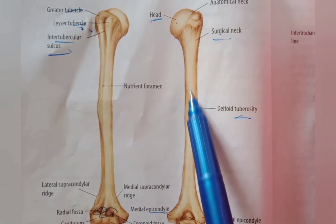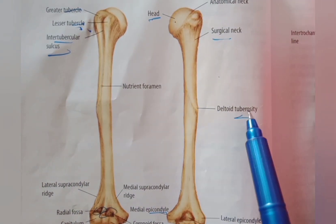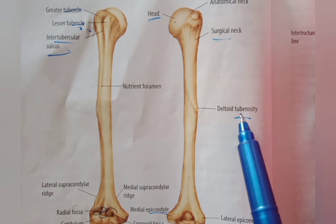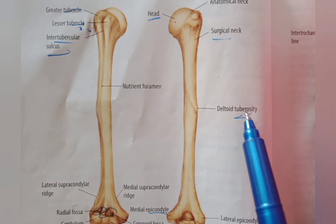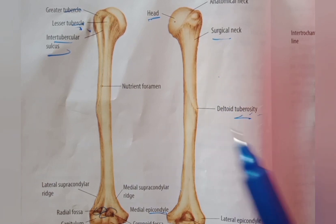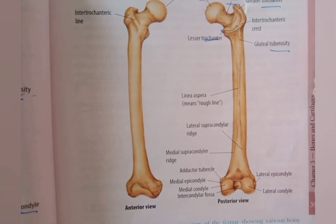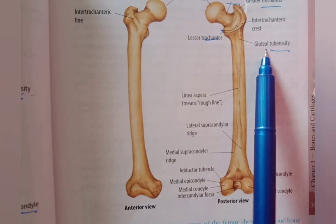Next, tuberosity is a rough appearance present on bone. This is the deltoid tuberosity. In the femur, this is the gluteal tuberosity.